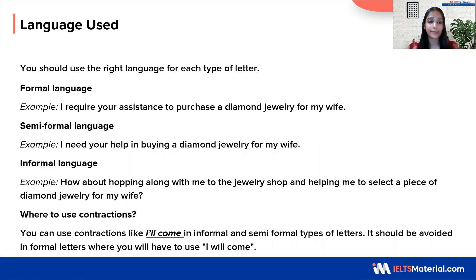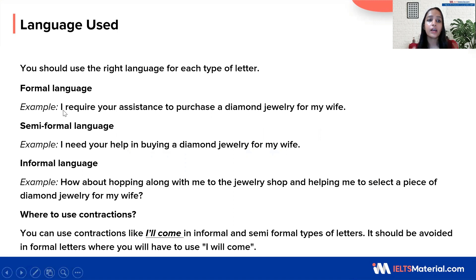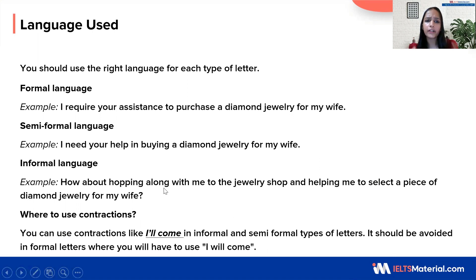Your formal language looks like this: I require your assistance to purchase a diamond jewelry for my wife. In a semi-formal letter, it would look like: I need your help in buying a diamond jewelry for my wife. Did you notice any difference? So we have used the synonyms of require, assistance and purchase. But in the semi-formal letter, it looks like this — need, help and buying. Now let's see informal language: How about hopping along with me to the jewelry shop and helping me to select a piece of diamond jewelry for my wife? You could see this kind of language is usually used with friends.